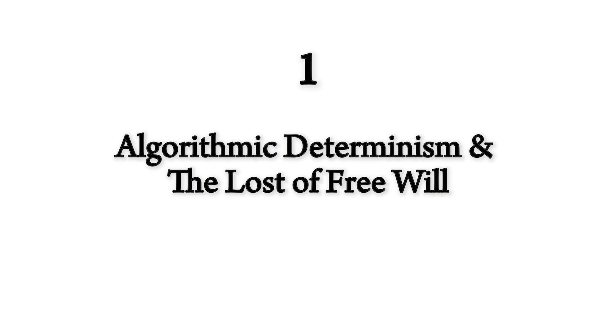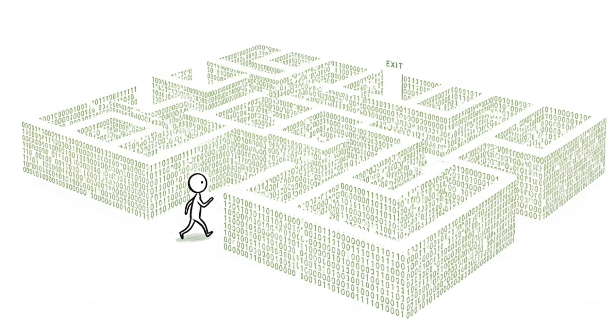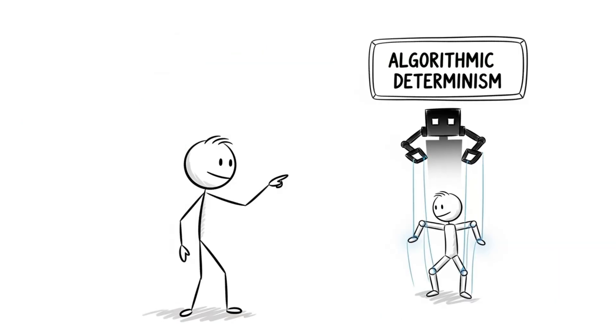Number one, algorithmic determinism and the loss to free will. Your life path is being written by a machine that predicted your next move years ago. This is algorithmic determinism. It's where AI influences your decisions and scripts them.